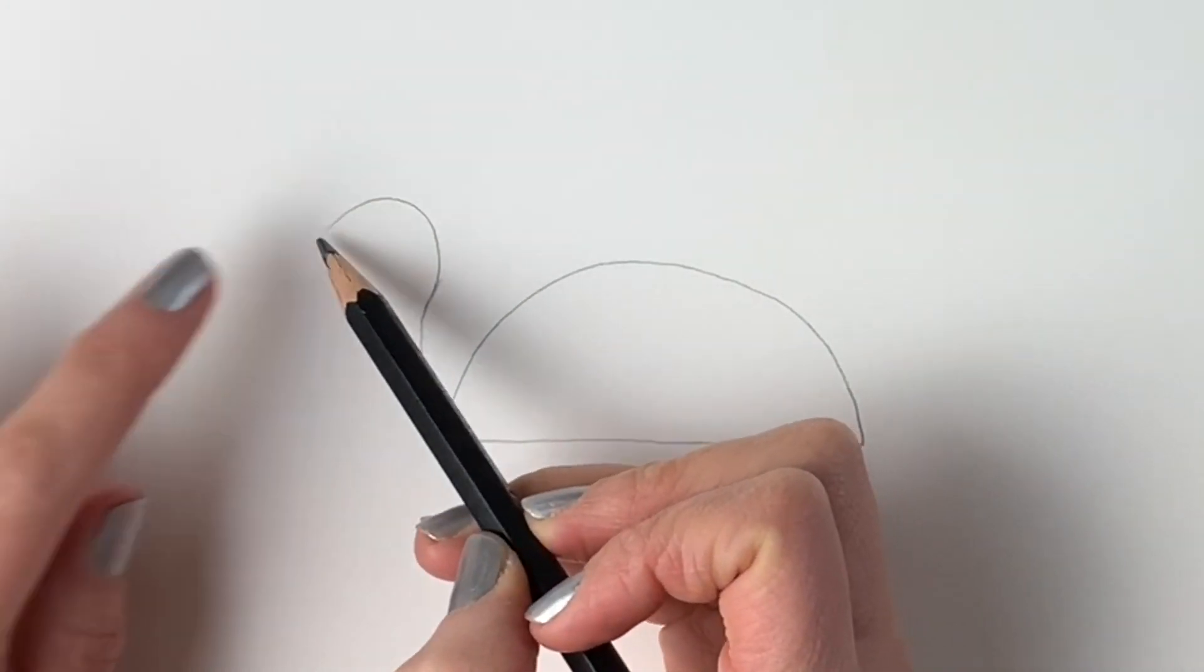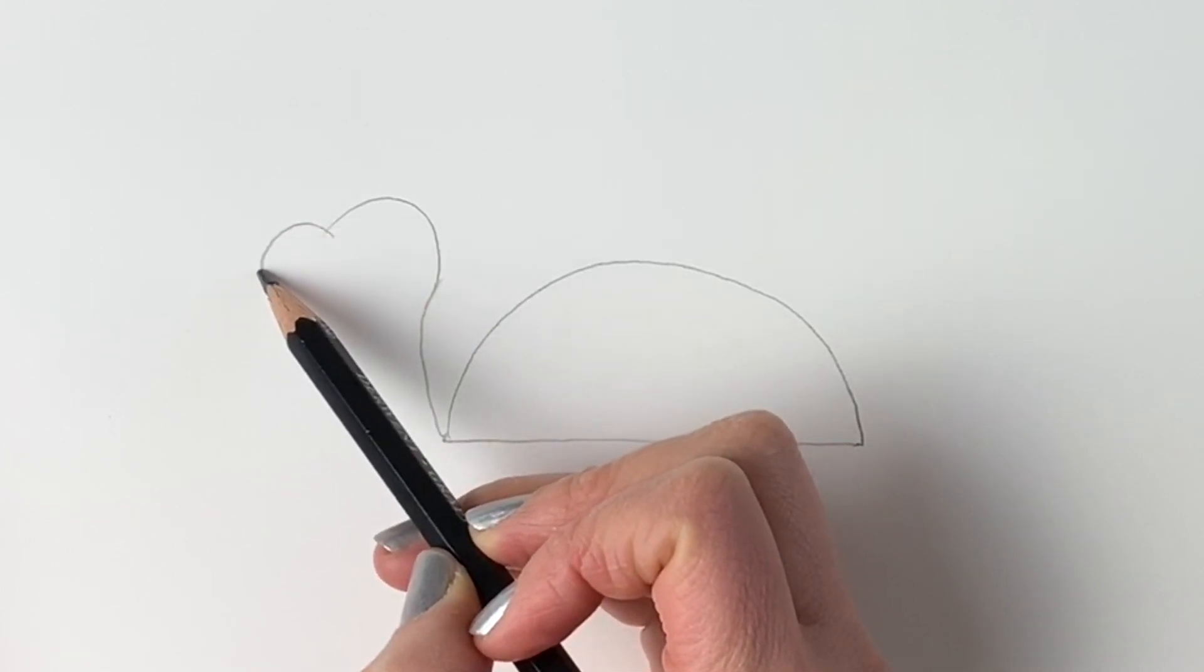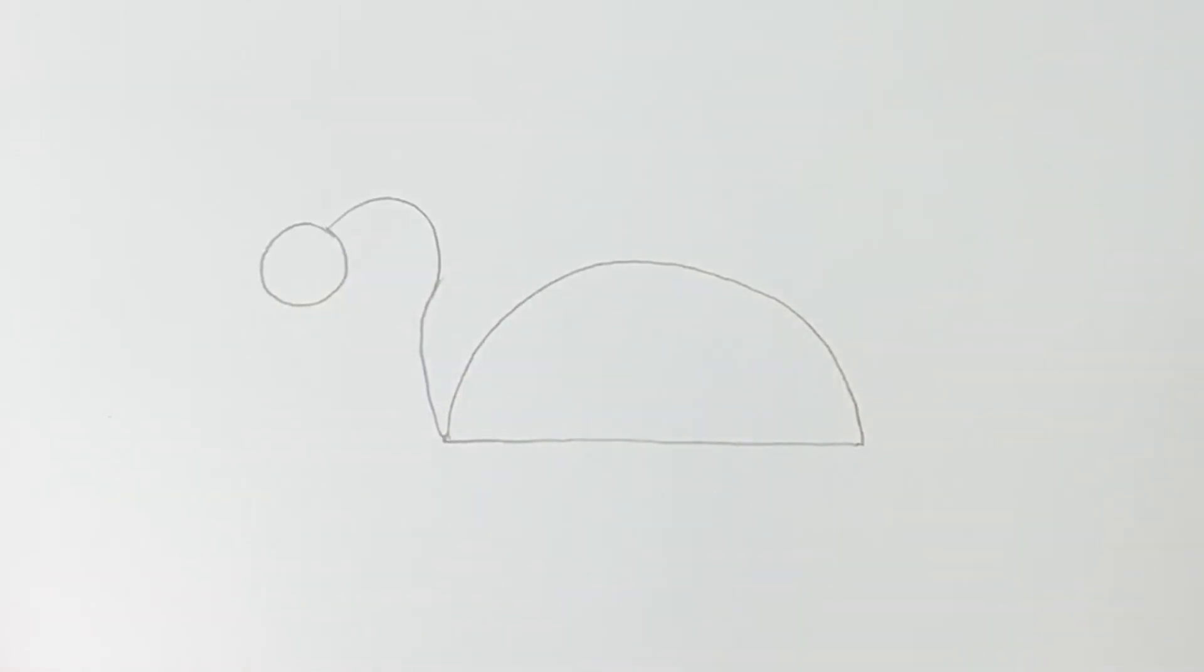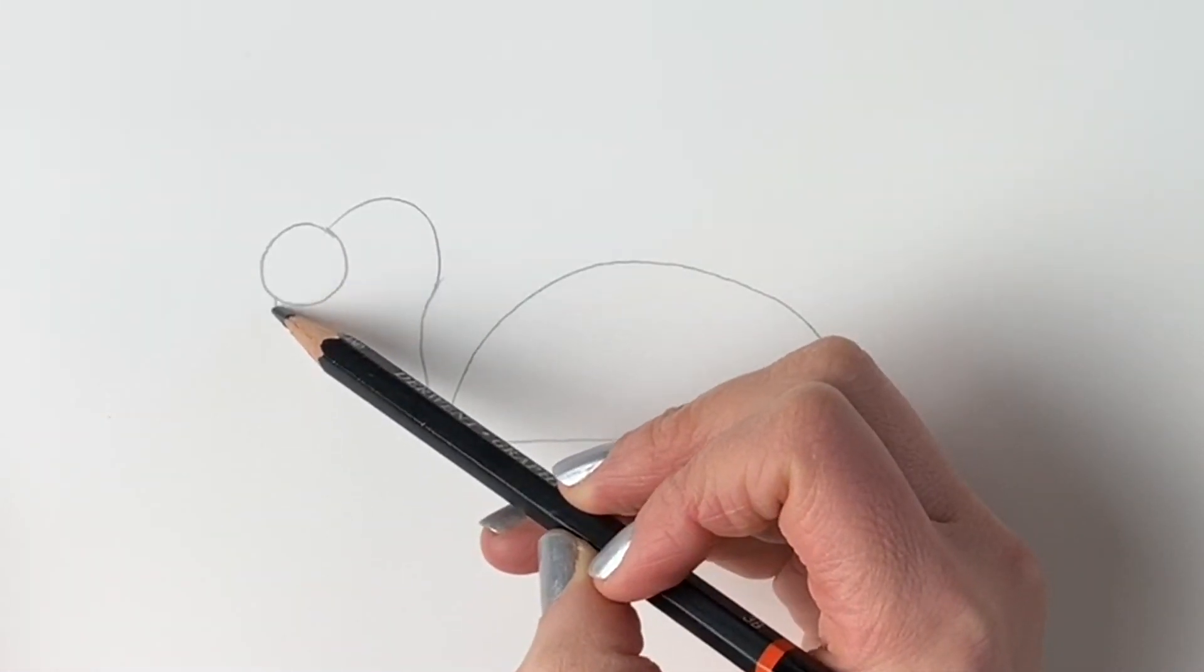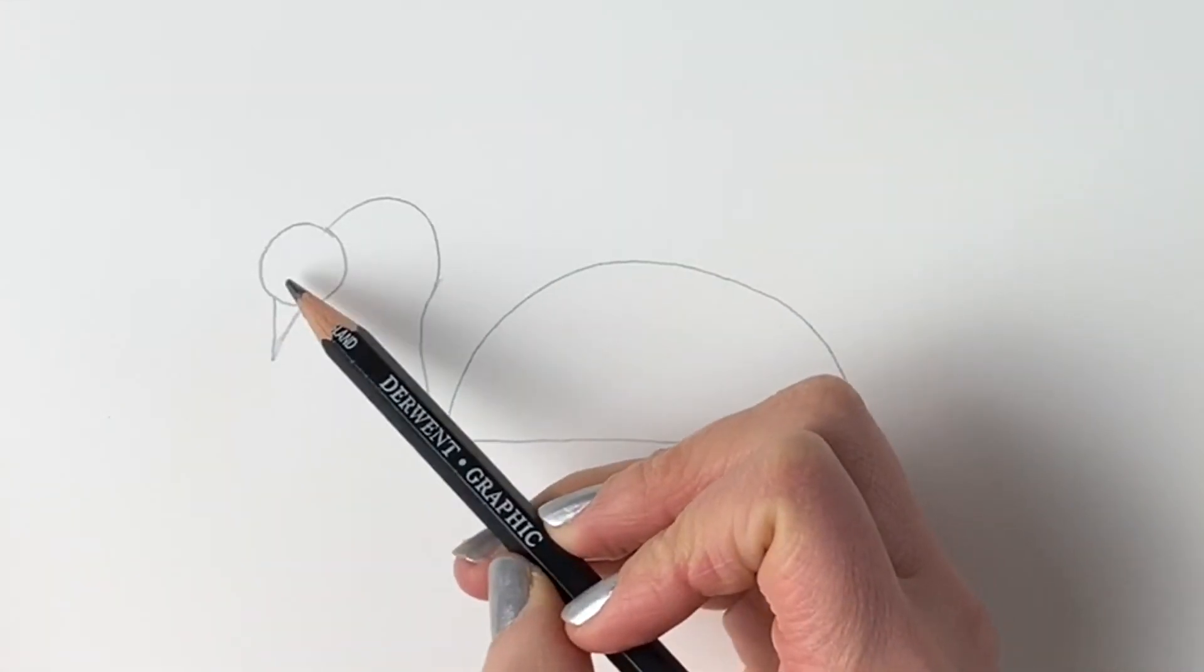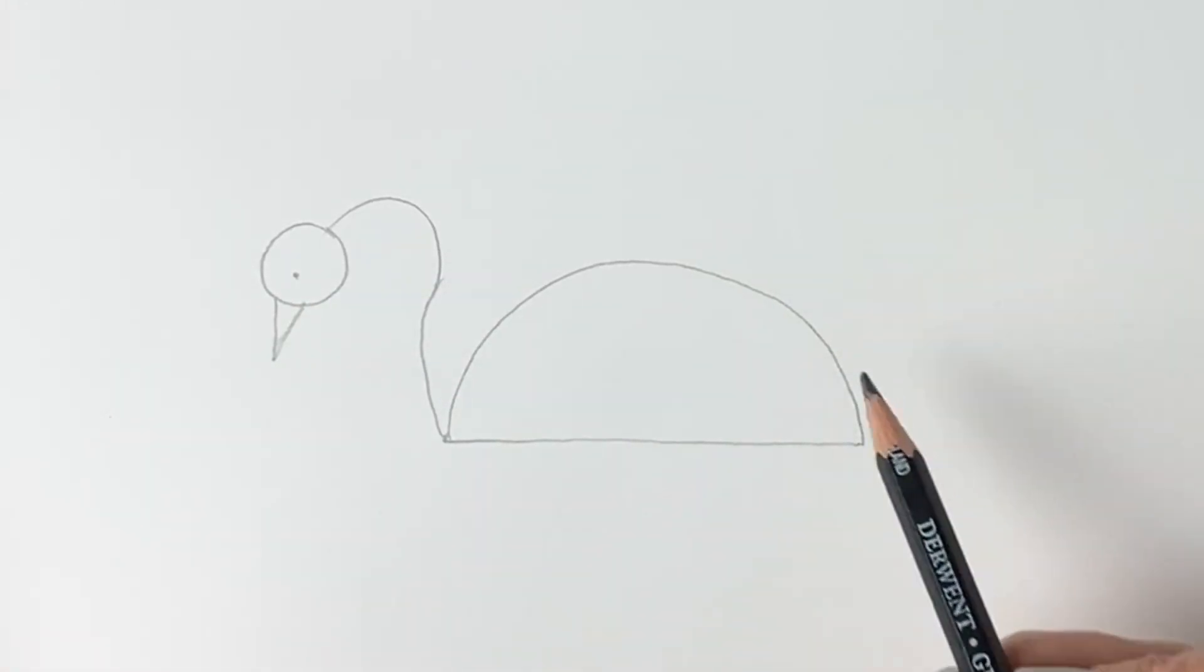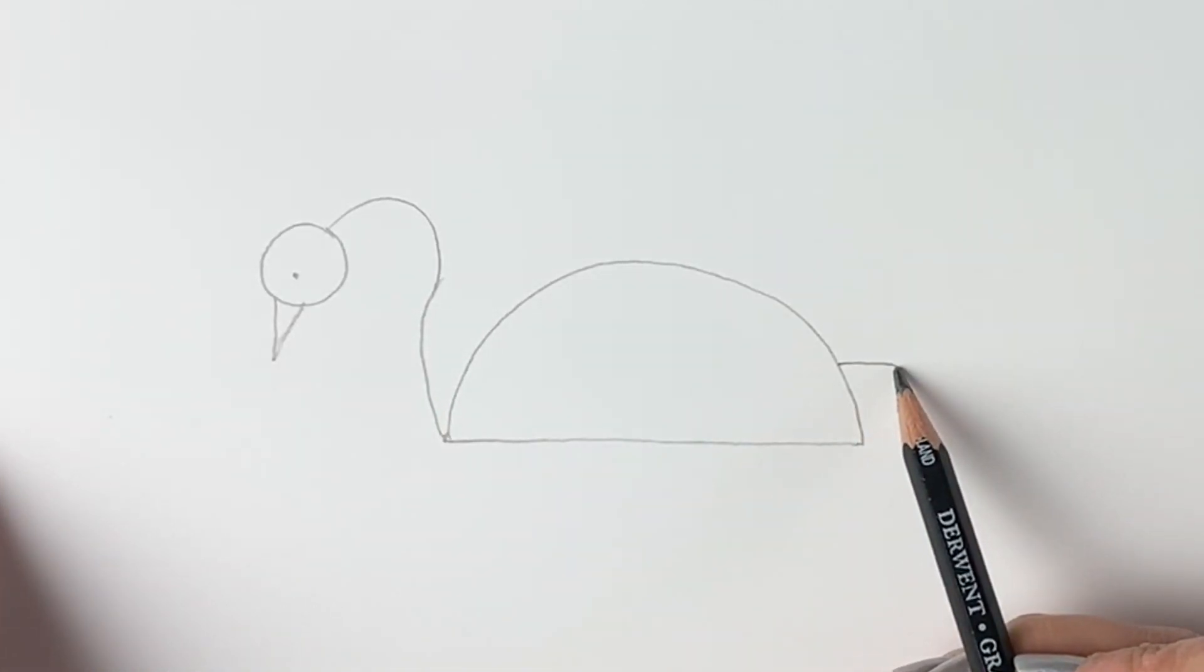On the end of that line we're going to add a circle. Remember, if I go too quickly just hit pause and rewind. On the bottom of this circle we're going to add the bill of a swan, so just a triangle shape like that, and then the eye. And then we're going to add the tail.